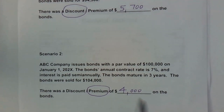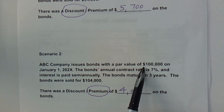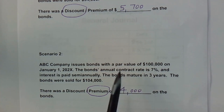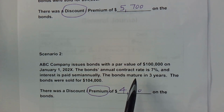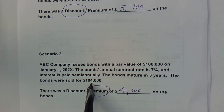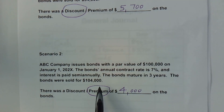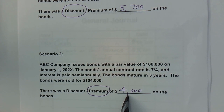In scenario two, we have the same $100,000 par value bonds issued on the same date. But in this case they were sold at a premium for $104,000. The actual premium is that difference, which is $4,000. We need to do the journal entry for scenario two.